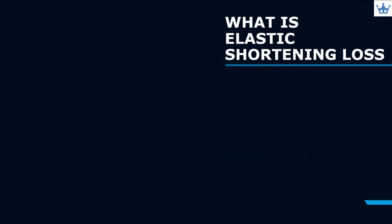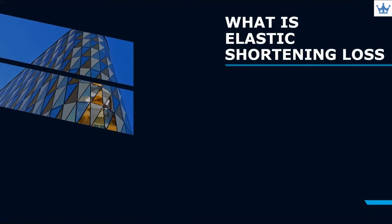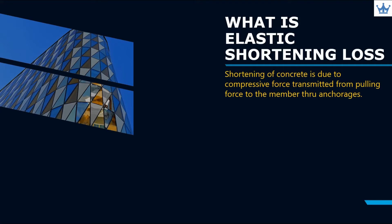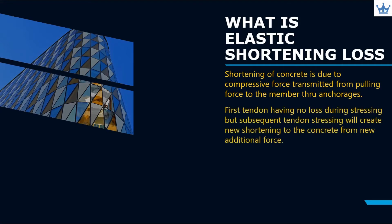What is elastic shortening loss? Shortening of concrete is due to compressive force transmitted from pulling force to the member through anchorages. First tendon will have no loss during stressing.